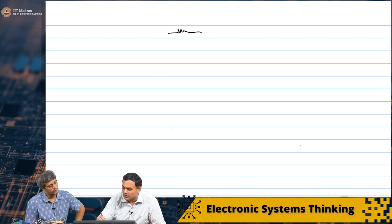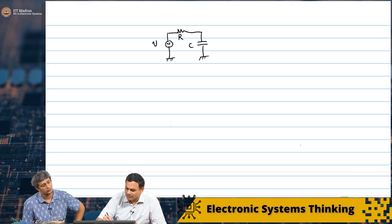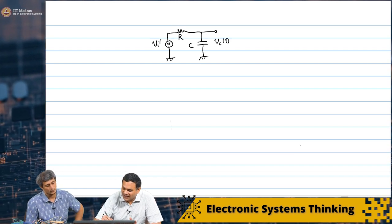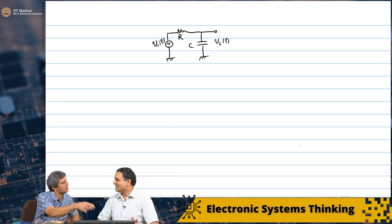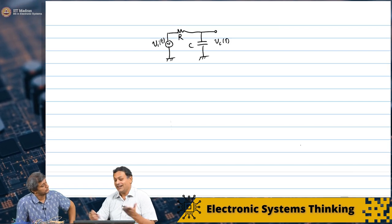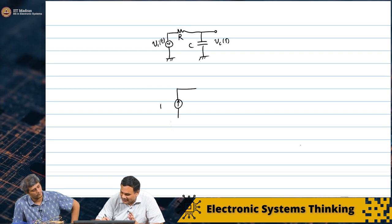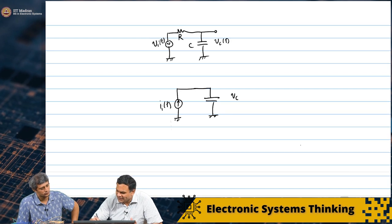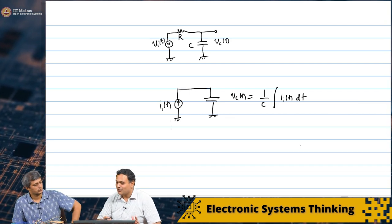You are converting current to voltage and doing the integration operation through a capacitor. If you take an input signal Vi and look at Vc of t — as we saw when we wrote the differential equation solution — Vc of t is basically the integral of Vi of t. Imagine you have a current signal; all you need is simply a capacitor to do this integration. So Vc of t is 1 over C times the integral of i of t dt. This is actually a low-pass filter with a zero cutoff frequency, with resistance set to zero. You can look at it as an averaging operation, as an integration.